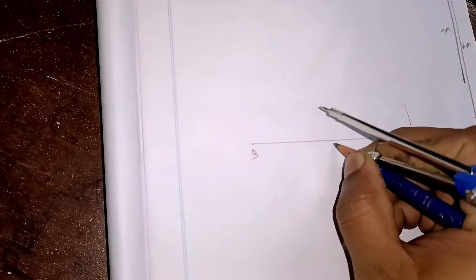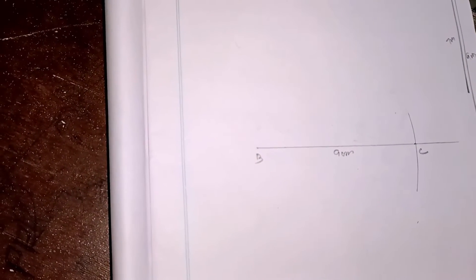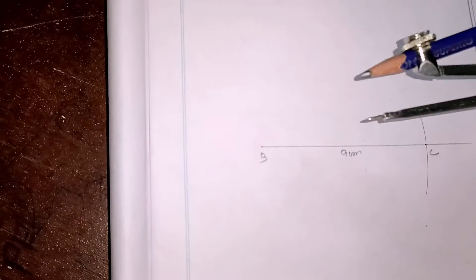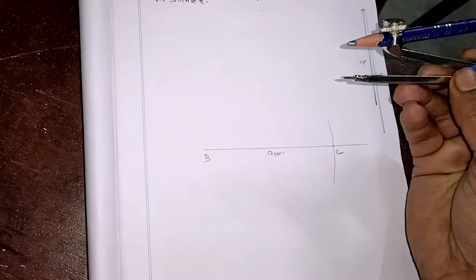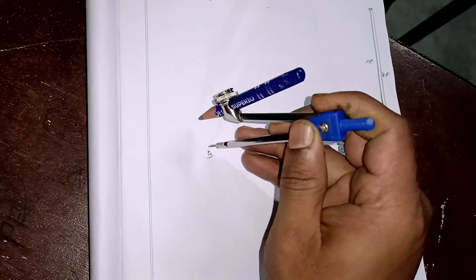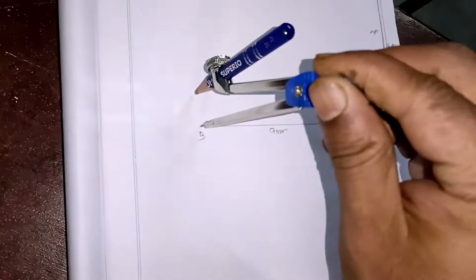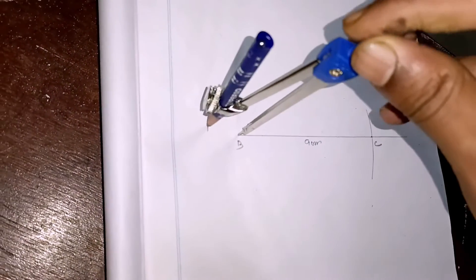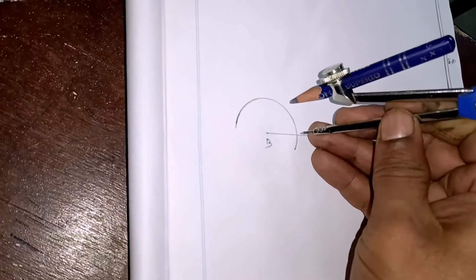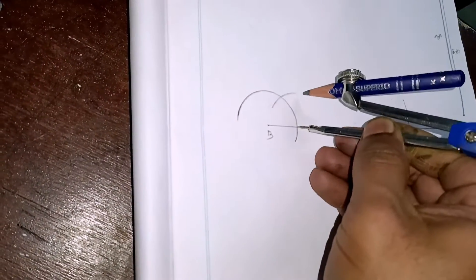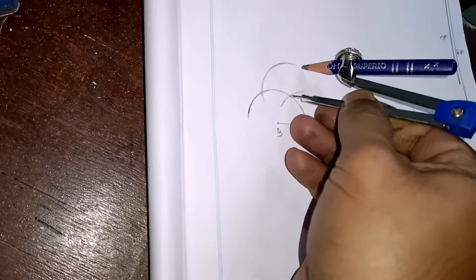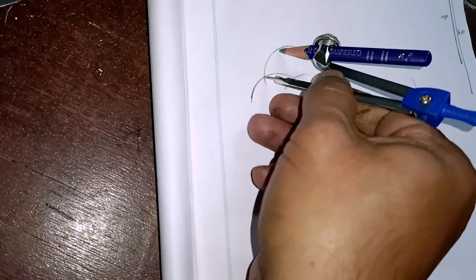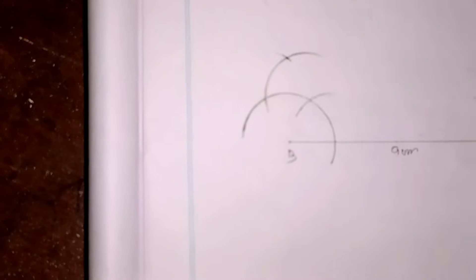This is BC which is 9 cm. Since this is a right-angled triangle, take the compass, make a small arc, keep it at point B, and draw the 90-degree angle. Make an arc of the circle and go to the intercepting point. Now this point gives your 90-degree straight line.